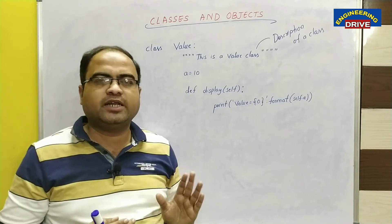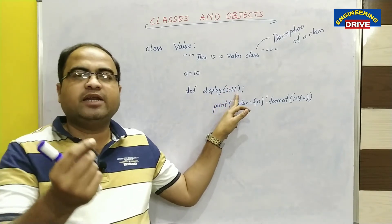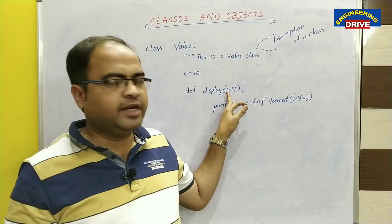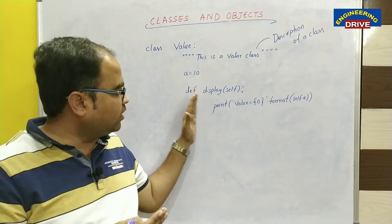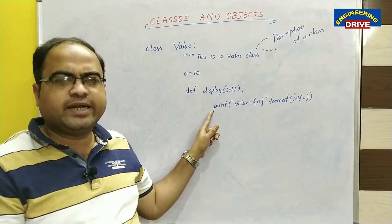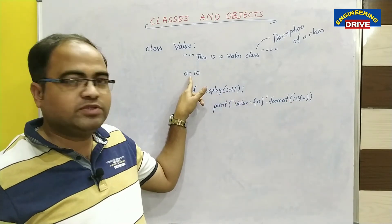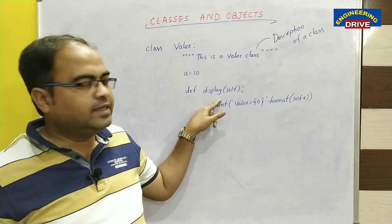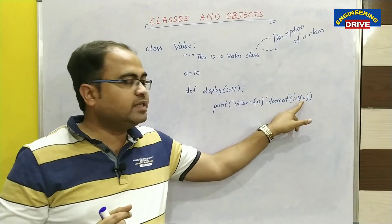To define a method in Python, we use the def keyword, followed with the method name and parentheses. There should compulsorily be at least one parameter in our methods — this is mandatory. I have taken the parameter named 'self' — you can take any name, but 'self' is conventional — followed by a colon. Then, with indentation (four spaces, one tab), I write: print with a format string accessing self.a. I cannot access 'a' directly inside the method because 'a' belongs to the class, not the method. That is why I write self.a. If you use two variables, you would similarly write self.b for the second one.